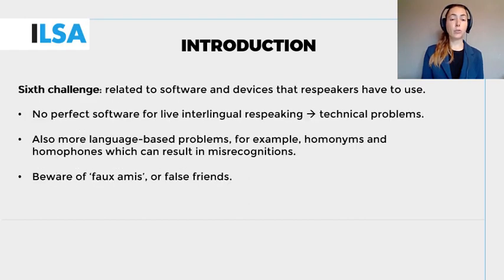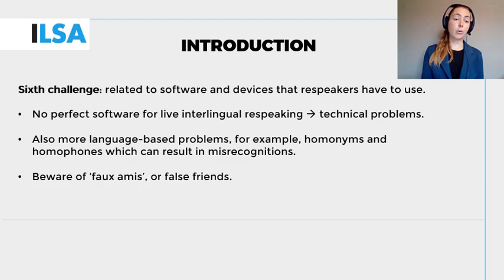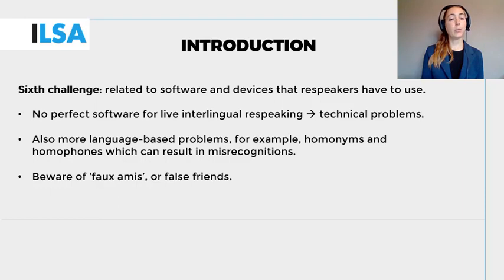Challenge number six is related to the software and devices that respeakers have to use. Unfortunately, the perfect software for live interlingual respeaking does not really exist yet, so you may encounter technical problems. There are also software-related challenges that are more language-based, for example homonyms and homophones, which can result in misrecognitions. On top of that, you must watch out for faux amis or false friends — since you are translating live, you might stay too close to the source, translate too literally, and make real content mistakes.